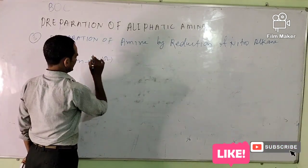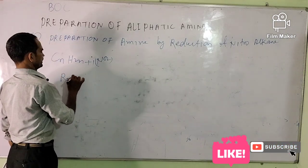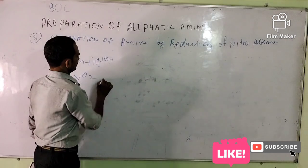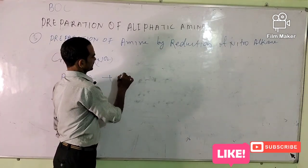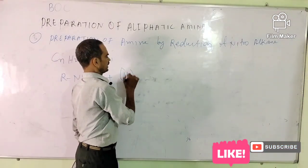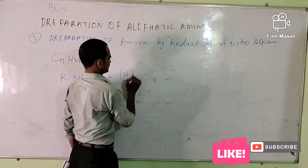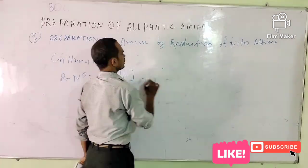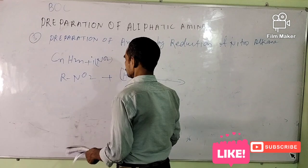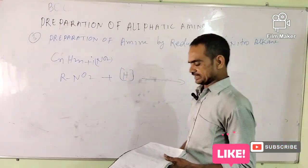We can write nitroalkane as RNO₂. Reduction ka matlab hai removal of oxygen and addition of hydrogen. Aur yeh reaction in presence of a reducing agent hoti hai.